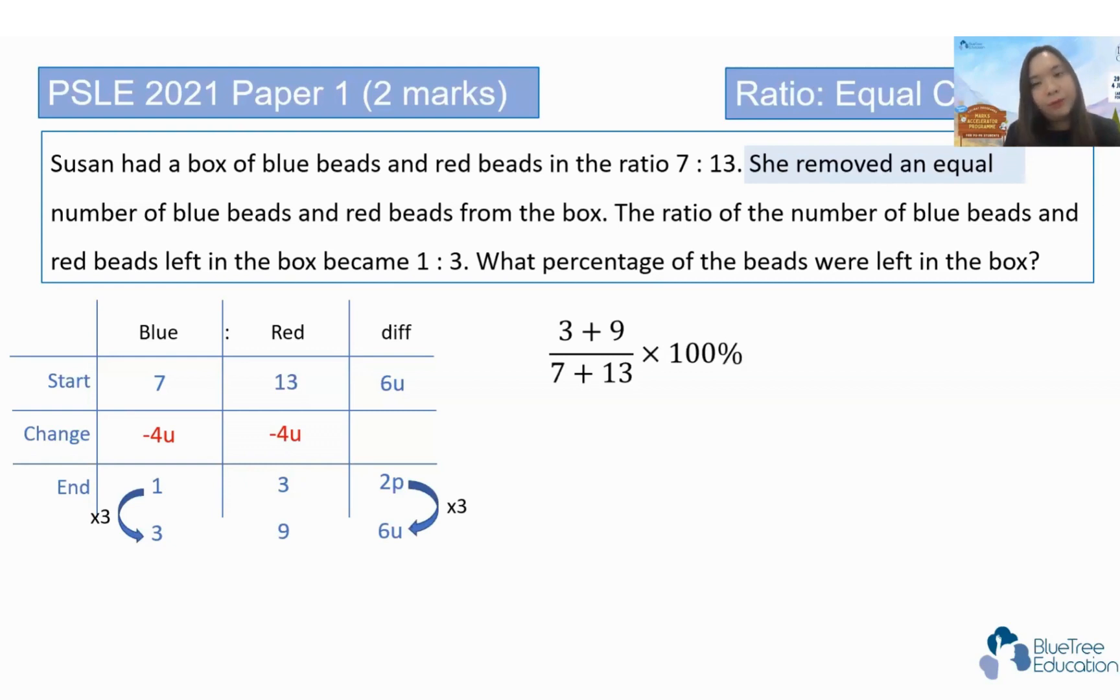Now, some people will be like, how do I convert it into a percentage when there is no value number given for number of beads? So what you can do is you work with the number of units. So you can see total, blue plus red is 9 plus 3, 12 units. And total, I have 20 units. So 12 over 20 times 100% gives me 60%. That's how I solve my question.